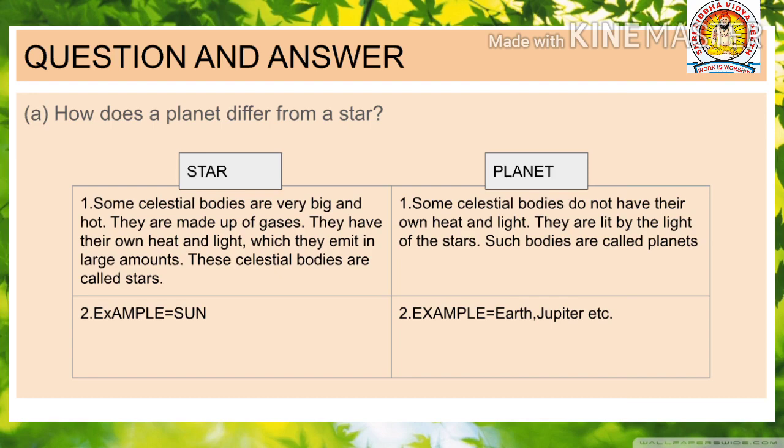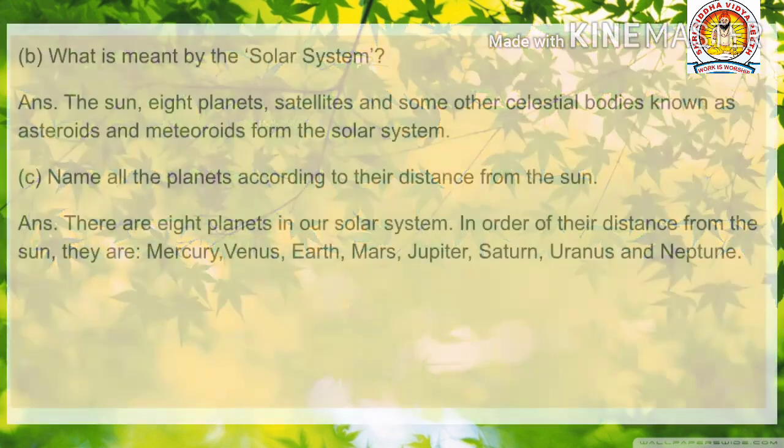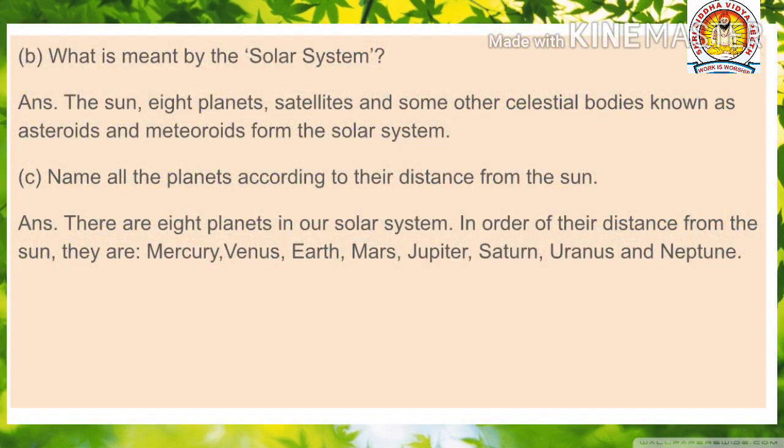Question number B: What is meant by solar system? Answer: The Sun, eight planets, satellites, and some celestial bodies known as asteroids and meteoroids form the solar system.